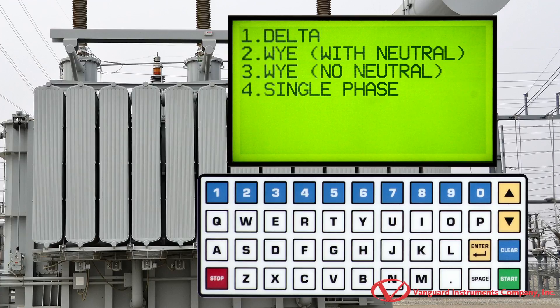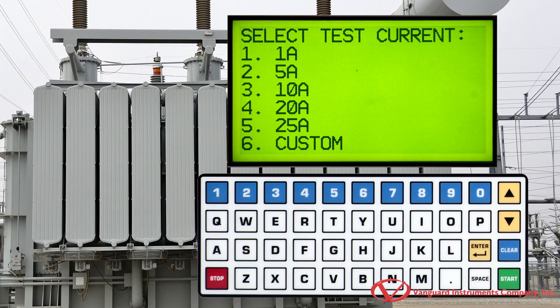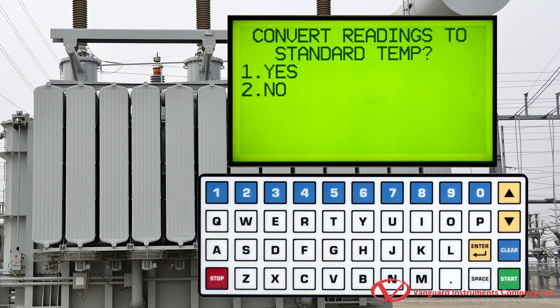We're now asked what type of transformer we're testing. We'll press the 1 key to select delta. From this screen we can select the test current. We'll select 10 amps by pressing the 3 key.